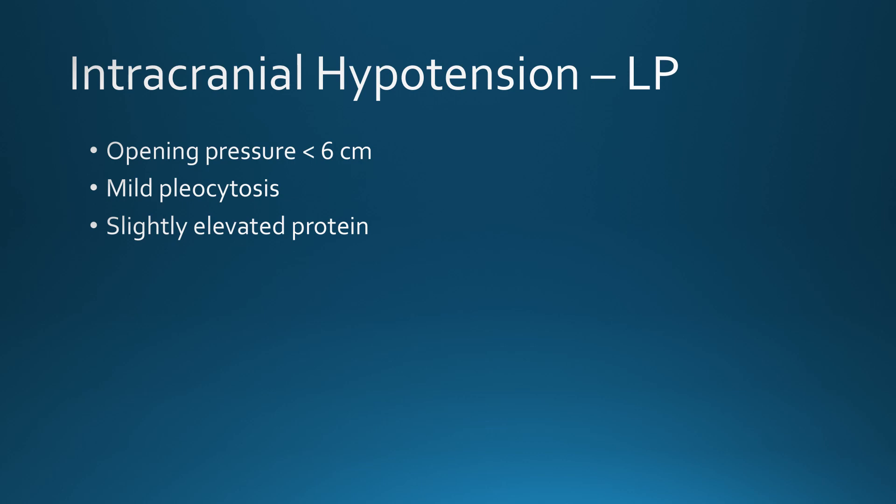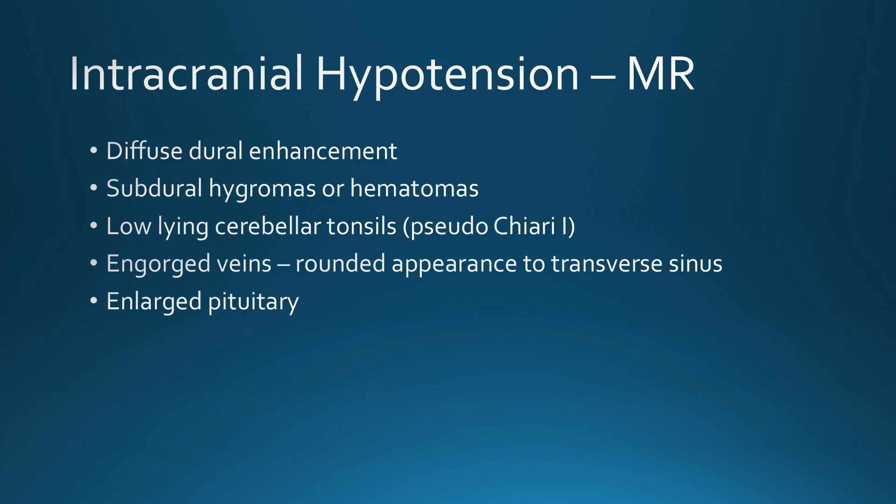Otherwise, there's just mild pleocytosis and mildly elevated protein. On MR, diffuse dural enhancement is the most common finding. Occasionally we'll see subdural hygromas or hematomas. The cerebellar tonsils may be low, which can mimic a Chiari 1 deformity. The veins are engorged, and often we'll see a rounded appearance of the transverse sinus.